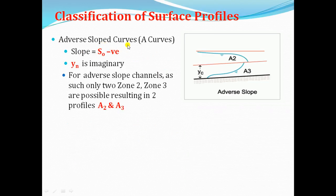Coming to adverse slope curves, which occur in adverse slope channels and are designated as A curves. Here the slope of bed of channel is negative and normal depth is imaginary or non-existent. For adverse slope channels, only two zones are possible. If the depth of flow is greater than the critical depth, it is zone 2, designated as A2. If the depth of flow is less than the critical depth, it is zone 3, designated as A3 curve.